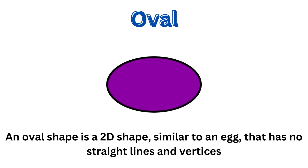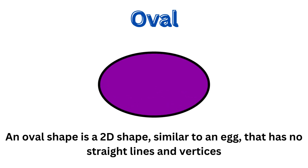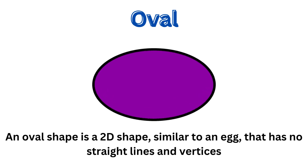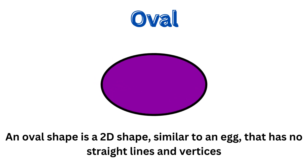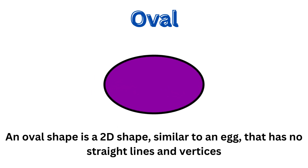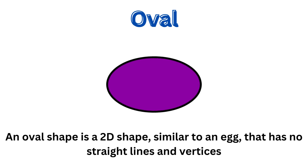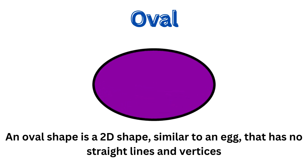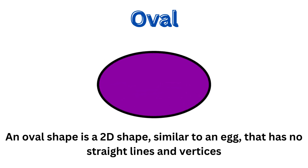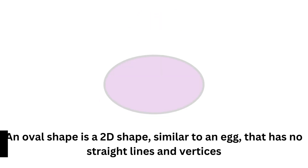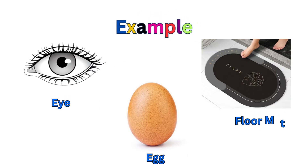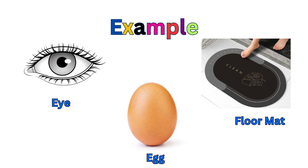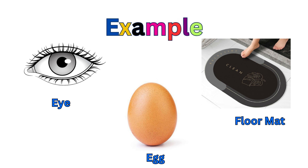This is an oval shape. An oval is a 2D shape similar to an egg that has no straight lines and no vertices. The examples are a height chart, an egg, and a floor mat.